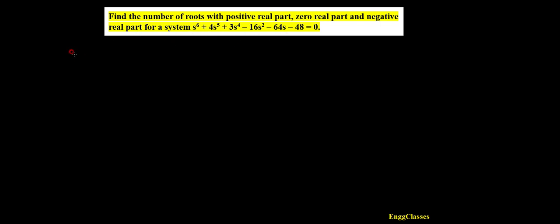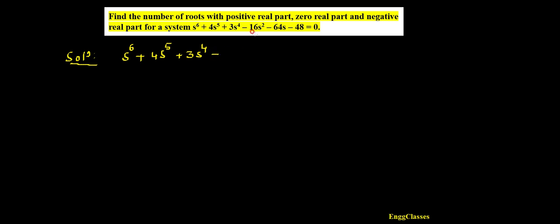To solve this I need to use the Routh-Hurwitz criterion. What I have to do is rewrite this equation as s to the power 6 plus 4s to the power 5 plus 3s to the power 4. Why I am rewriting this — because s to the power 3 is missing. So I need to write 0 into s to the power 3, minus 16s squared, minus 64s, minus 48, equal to 0.